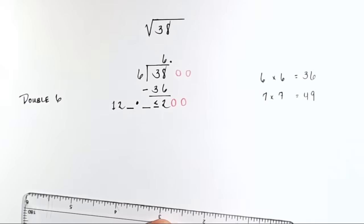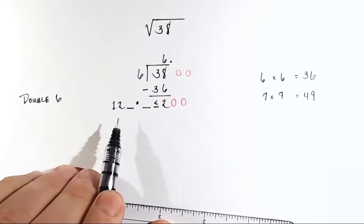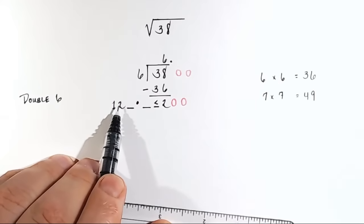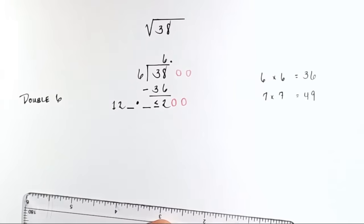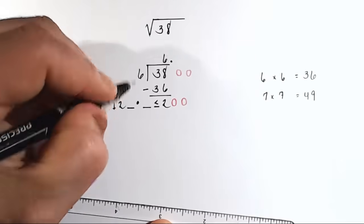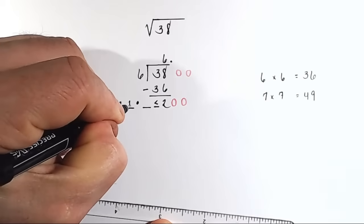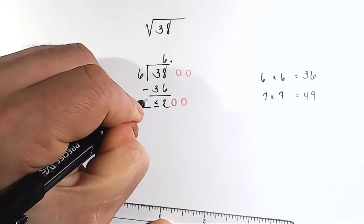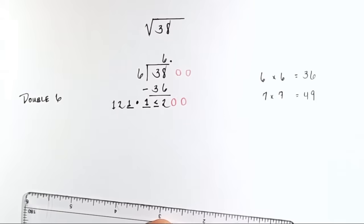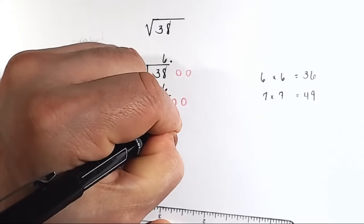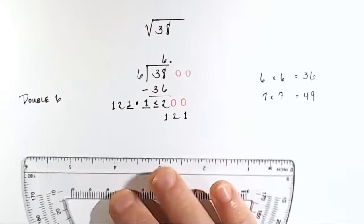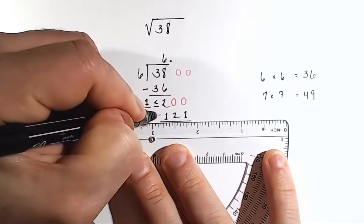Well, it's just 1, right? Because if you did 122 times 2, you would get a number that was bigger than 200. So it's 121 times 1. Okay, 121 times 1 is 121. Put that here. And now perform the subtraction.